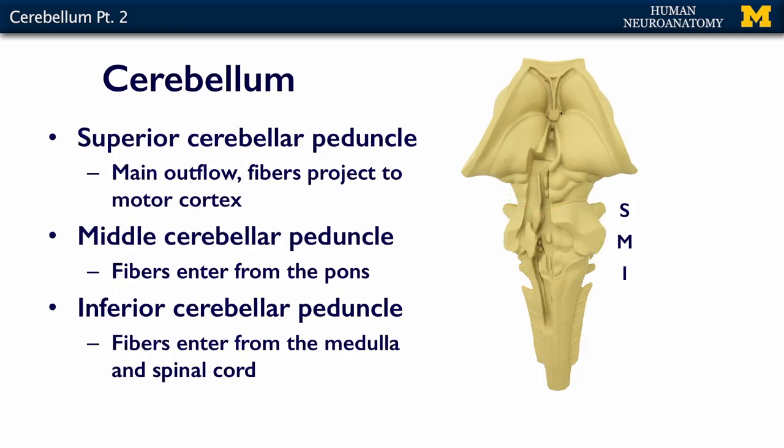The superior cerebellar peduncle is the main outflow of the cerebellum. A lot of information comes into the cerebellum, but its main outflow — or efferent, exiting information — is found in the fibers of the superior cerebellar peduncle. The middle cerebellar peduncle is bringing afferent, or arriving, information into the cerebellum, and most of those fibers arrive in the pons.